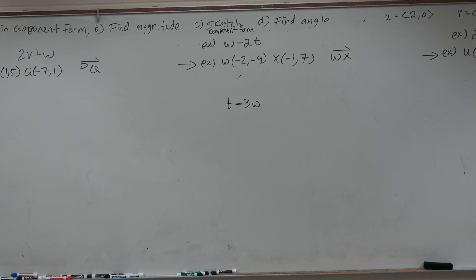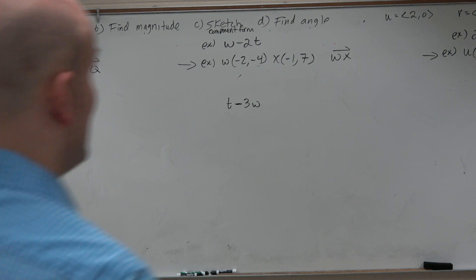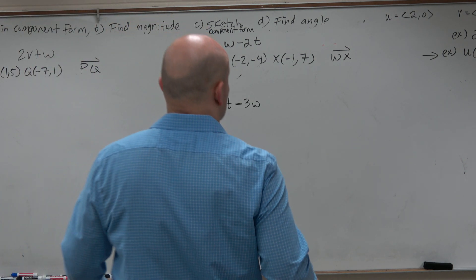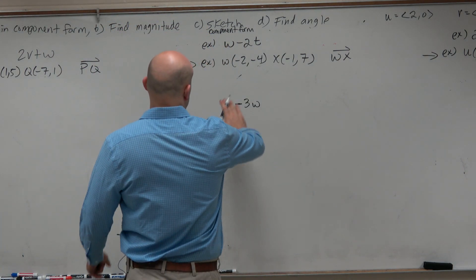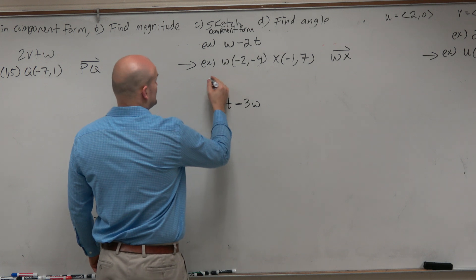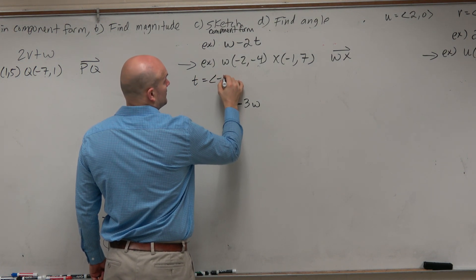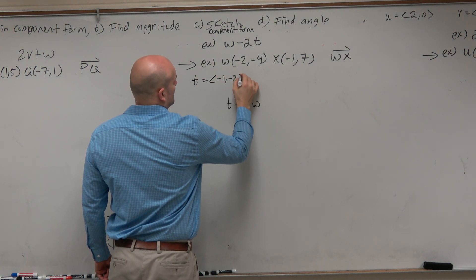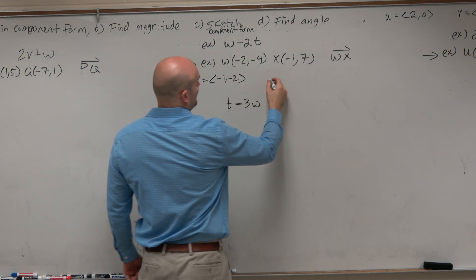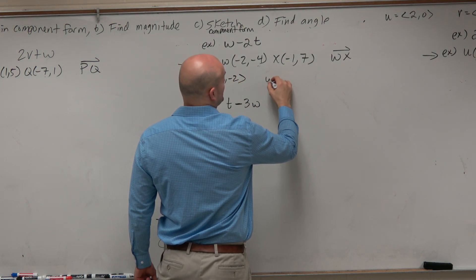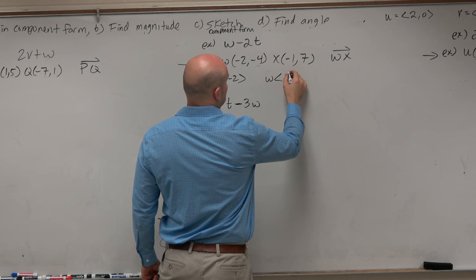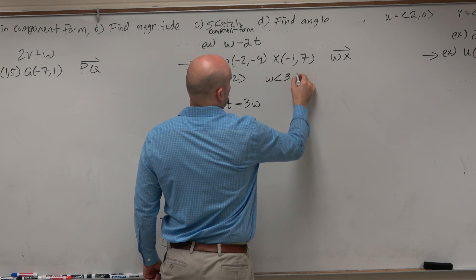In this example, we have t as a vector, which is negative 1, negative 2. You can notice that these are in component form. And then we have w as a vector 3, comma 1.